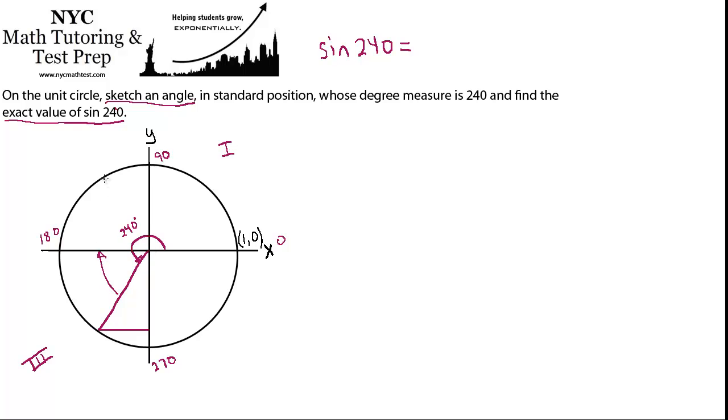If it was in the second quadrant, then we'd be subtracting 180 minus the angle. So just hypothetically, if you had some angle that was in the second quadrant, you would do 180 minus that angle, because that would be the distance away from the x-axis. But I don't want to confuse you, so that's not what we're doing in this case. In this case, we're finding 240 minus 180.